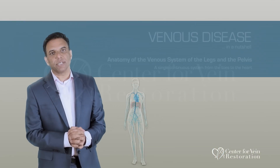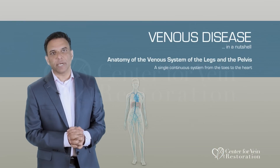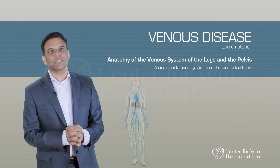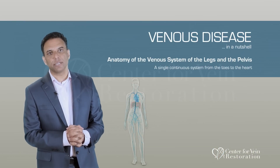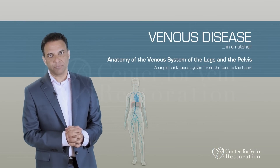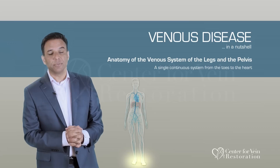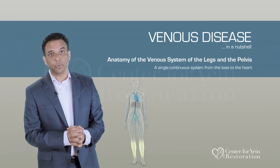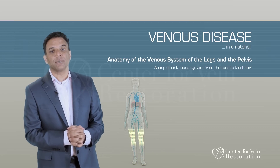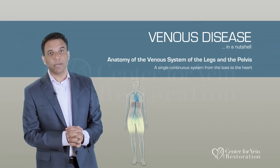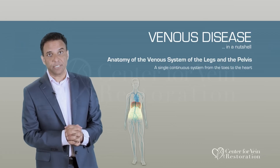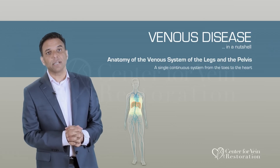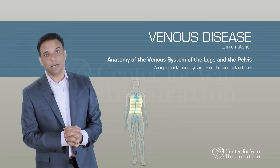The venous system needs to be evaluated as a single continuous system. This system starts from the dorsum of the feet, through the legs, into the abdomen and pelvis, the subdiaphragmatic venous areas, and finally into the chest and the heart.